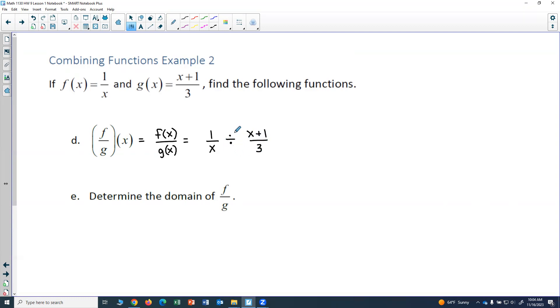And now looking at this, I have division of two quotients. So I'm going to use the rule where I flip the quotient that comes after the division symbol and change to multiplication. So I'll have 1 over x times 3 over x plus 1. And so I end up with 3 divided by x times x plus 1 in the denominator. So there's my f over g.